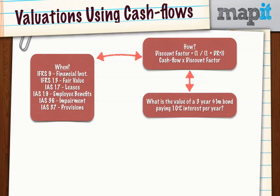So a simple example: let's say we're asked what is the value of a three-year, one million bond paying 10% interest per year. We could get a valuation on that bond by discounting the cash flows we expect to receive on it. We need a little table with the year, the item — because each year we'll have interest, and then the final year we'll also have the capital repaid — the amount, and the discount factor.